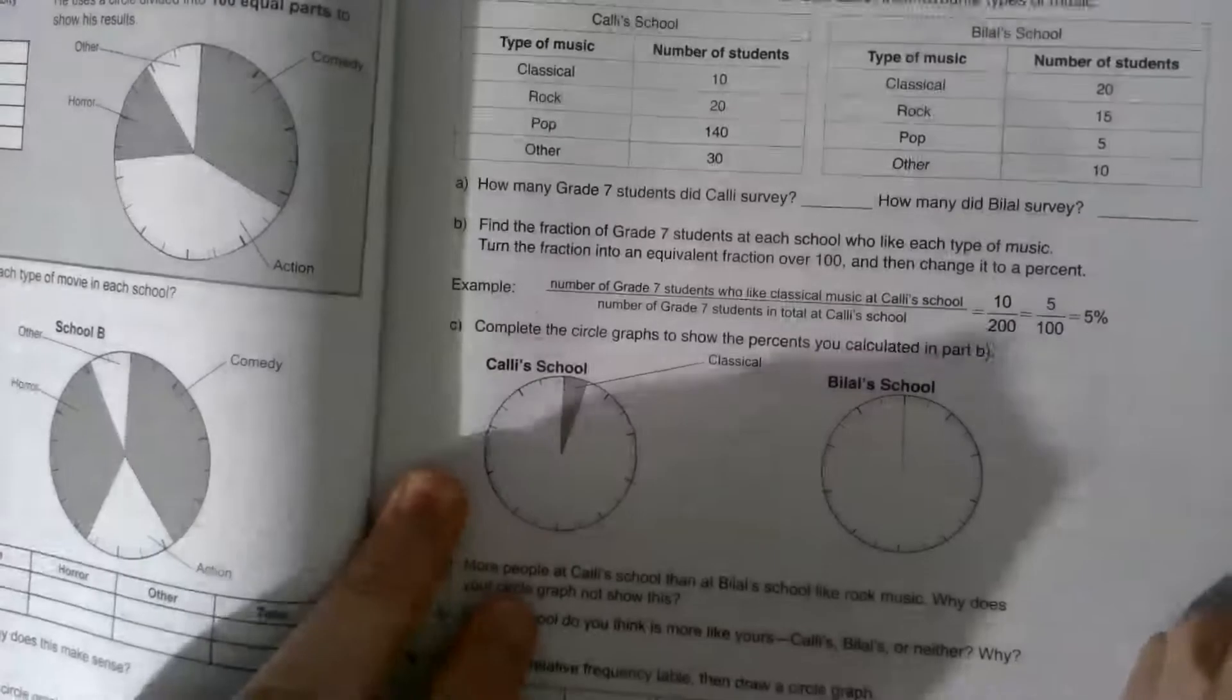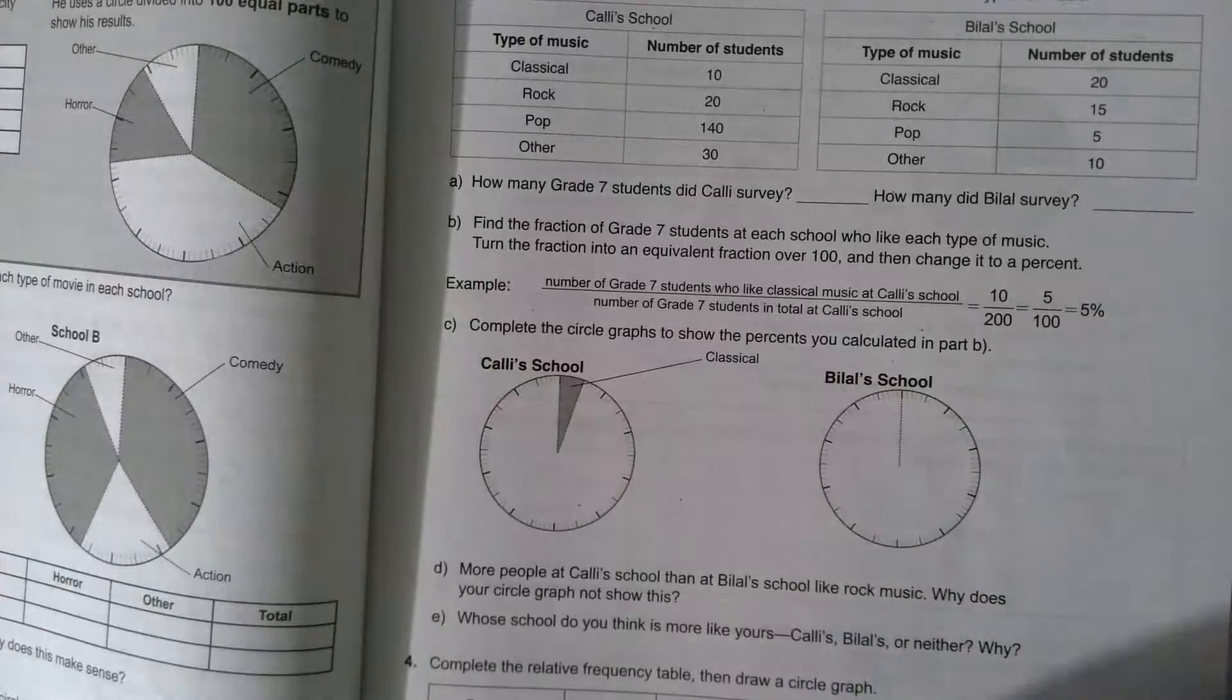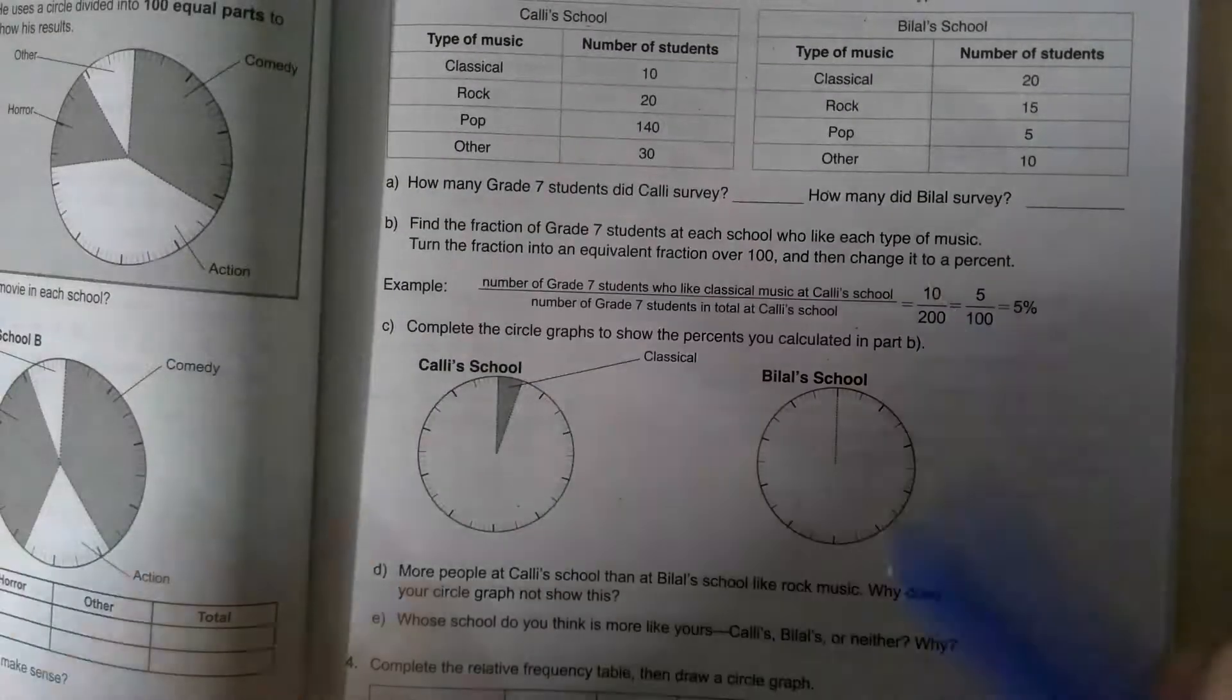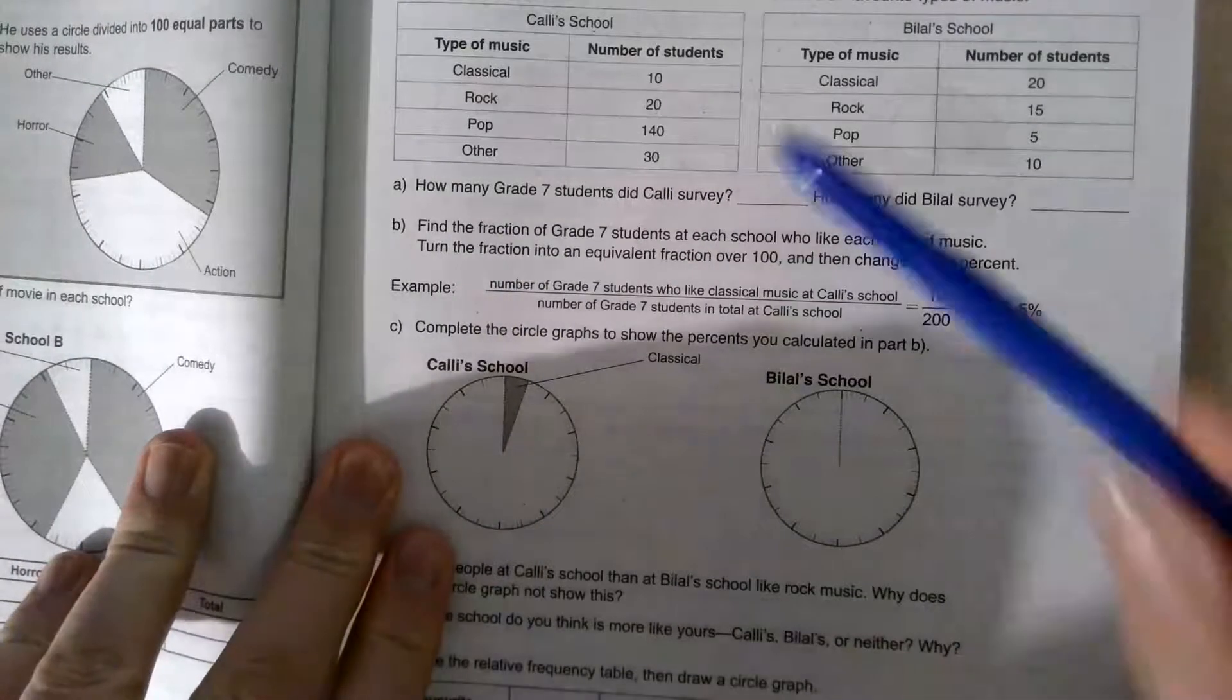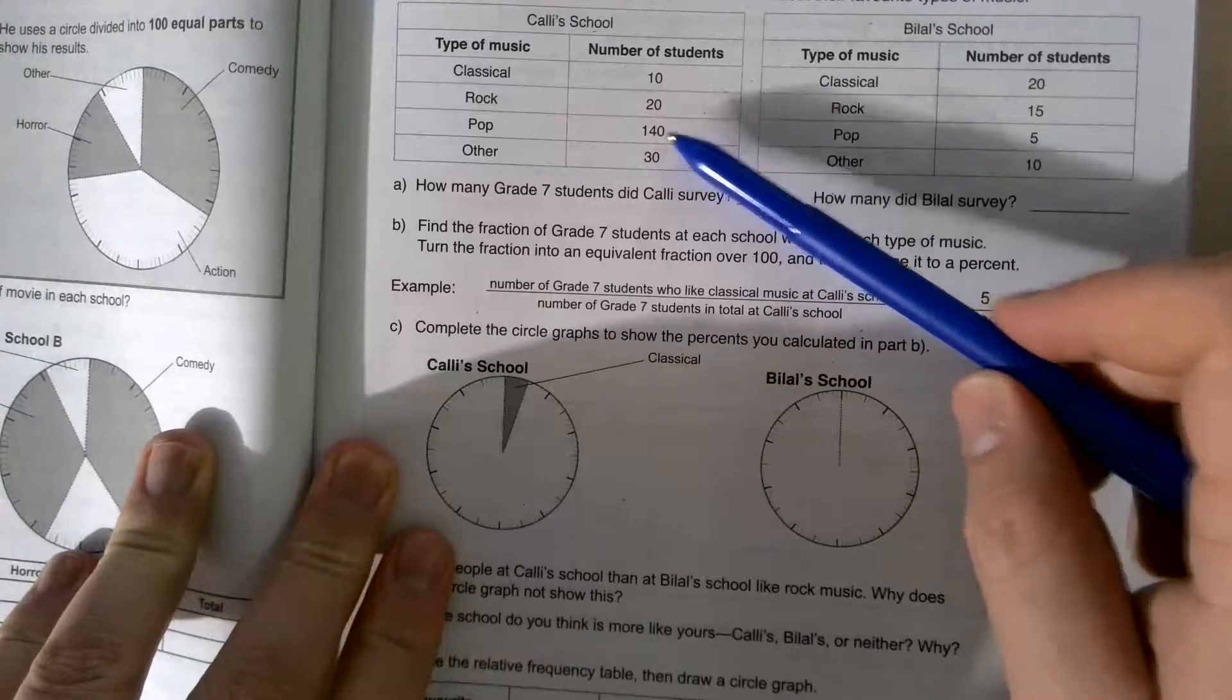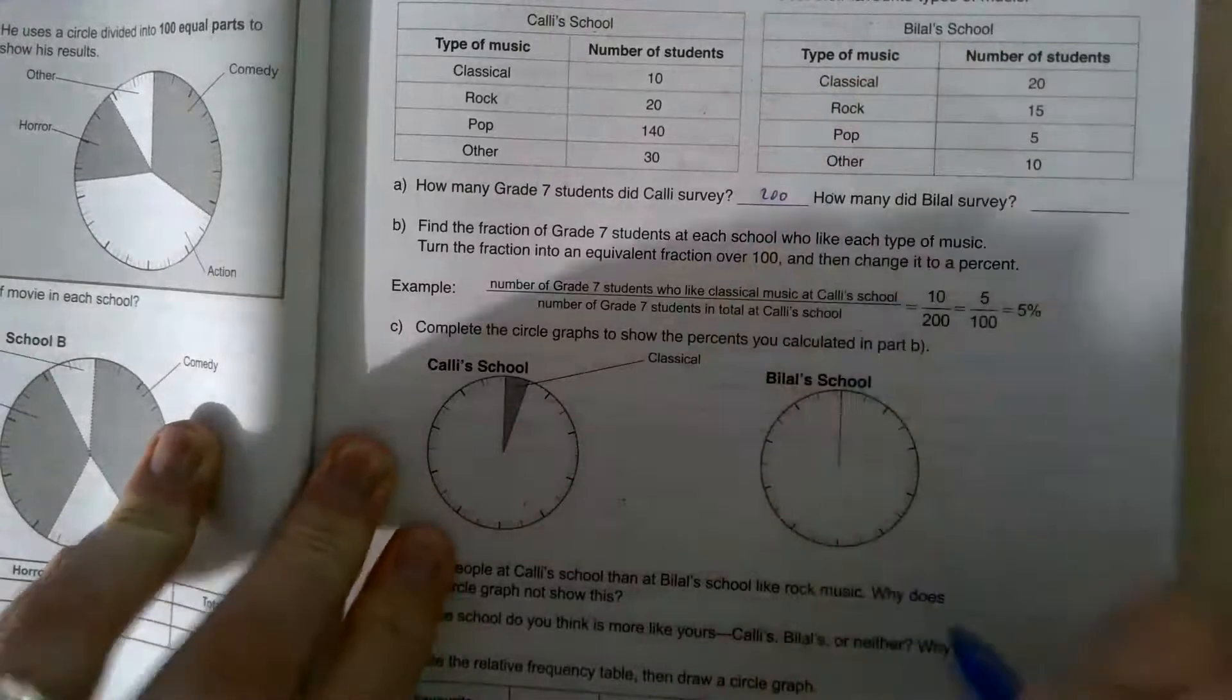Now how do we actually find the actual value of a percentage? What we can do is we want to figure out, what's my overall number of how many people are participating in an activity? So for this question, we can look at Cali School. So how many grade 7 students did Cali survey? We want to figure out how many people are all together. So this is 10 plus 20, which is 30, plus 140, which is 170 plus 30. So there's 200 people all together in Cali survey.